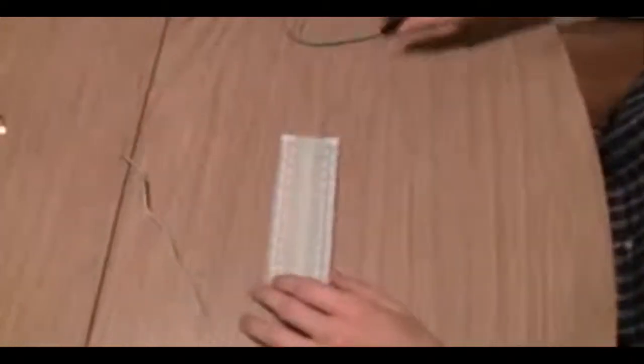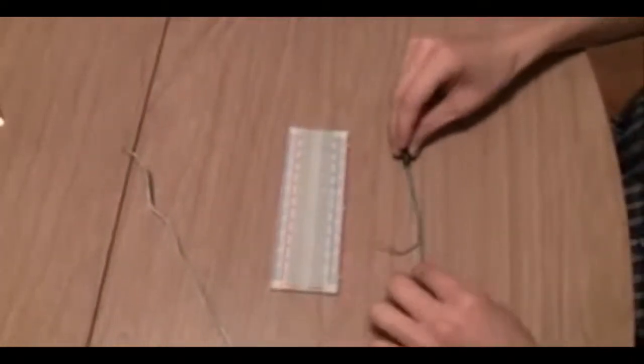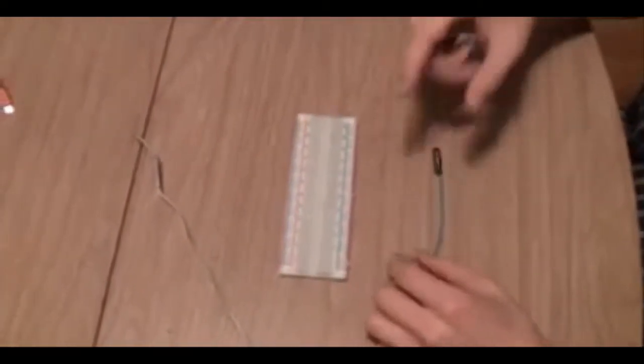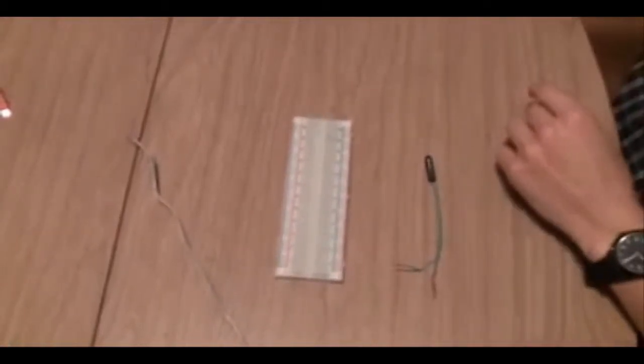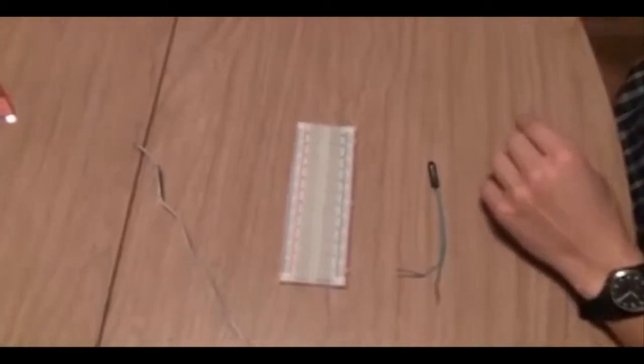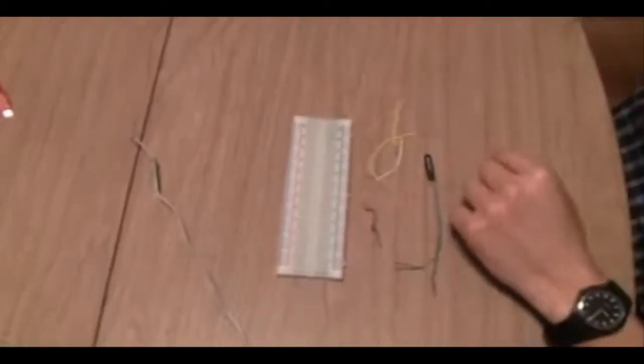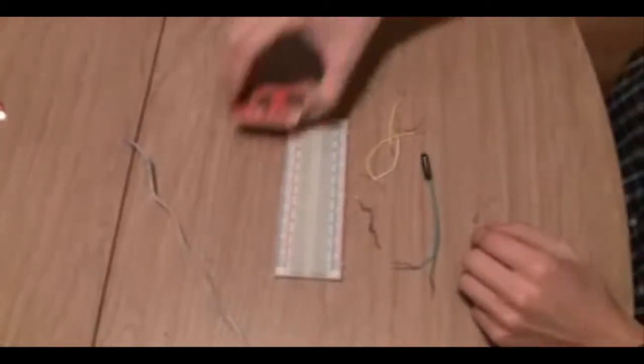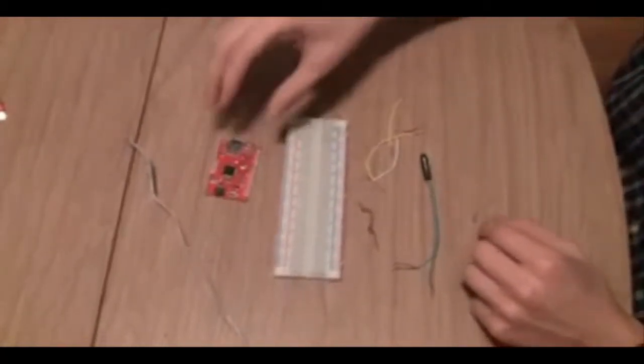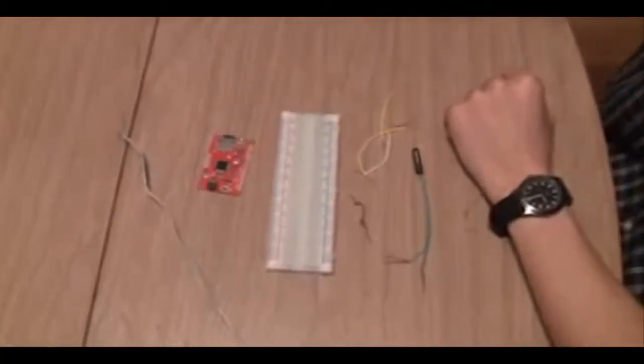What you'll need is first a breadboard, a thermistor, and the details for exactly what kind are listed in the paper that will accompany this video. You'll need about four or five one to two inch strips of wire. You'll need a 10 kilo-ohm resistor. A data logger. This particular type is a logomatic V2 data logger.